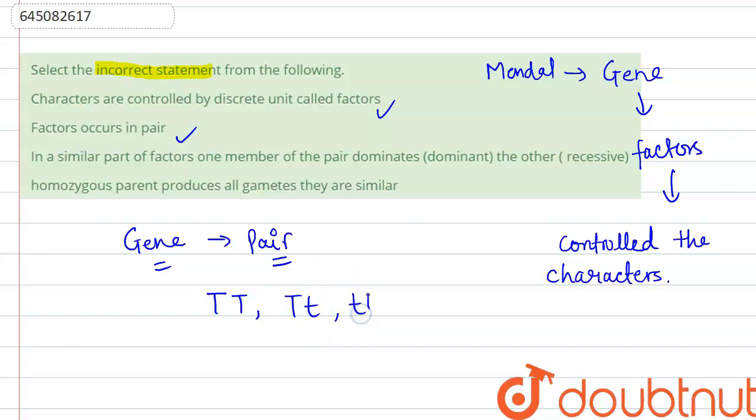Option third: In a similar pair of factors, one member of the pair dominates the other, which is recessive. In this case, it is not recessive. In a similar pair of factors where